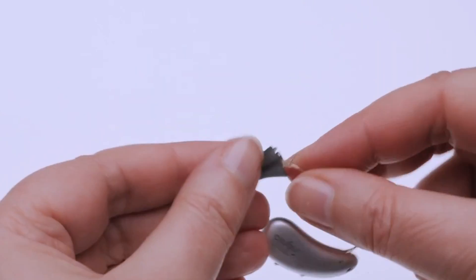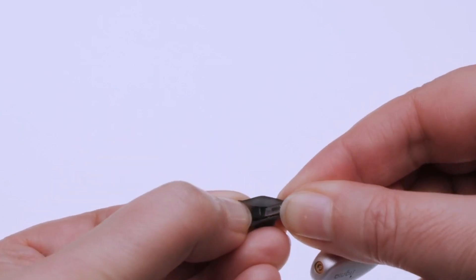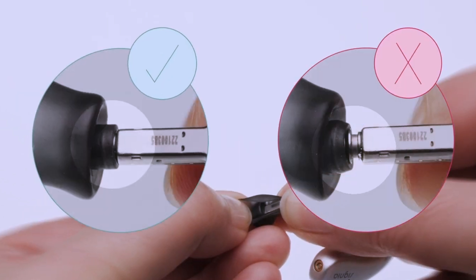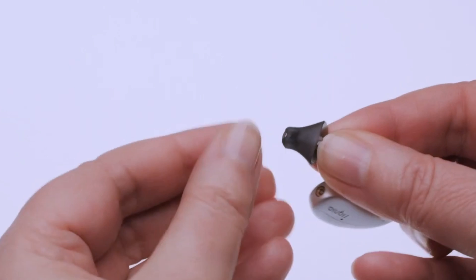When properly placed, you should not be able to see the notch when folding the dome away from the receiver. Try pushing the dome further onto the receiver if the notch is still exposed until it is completely covered.